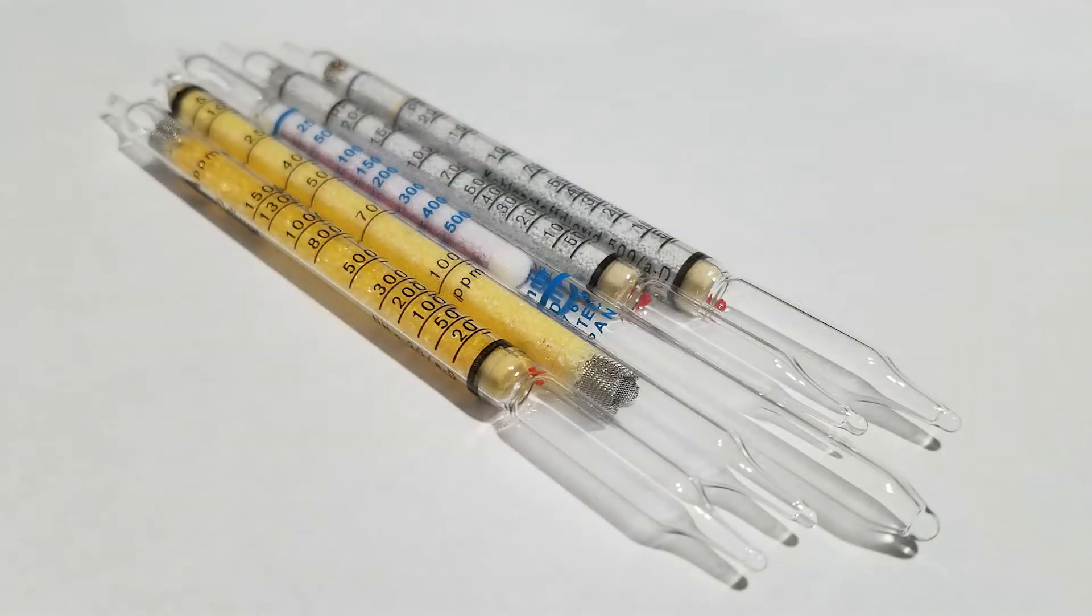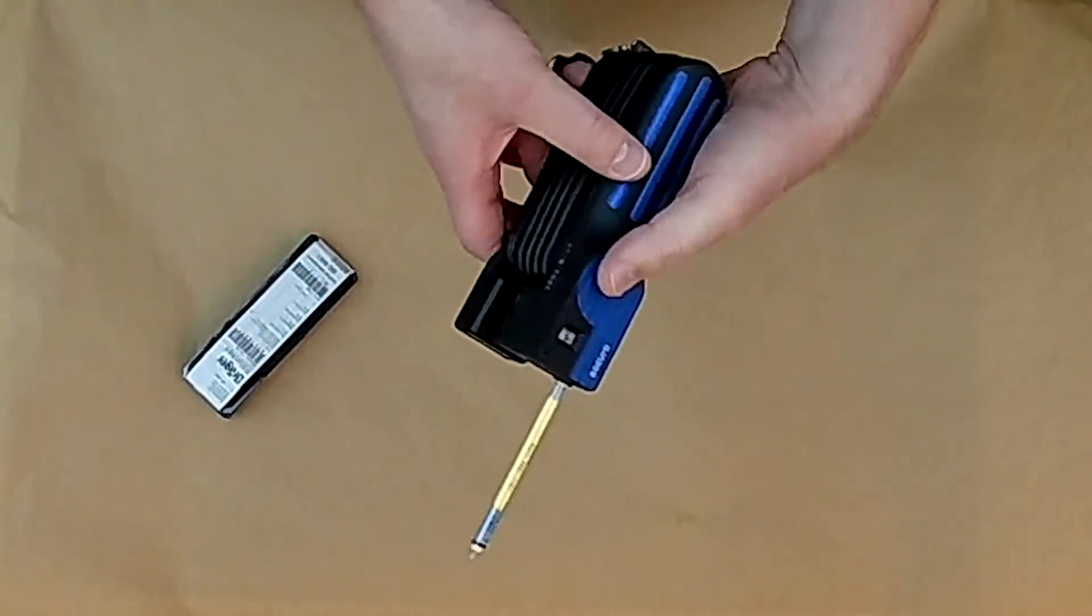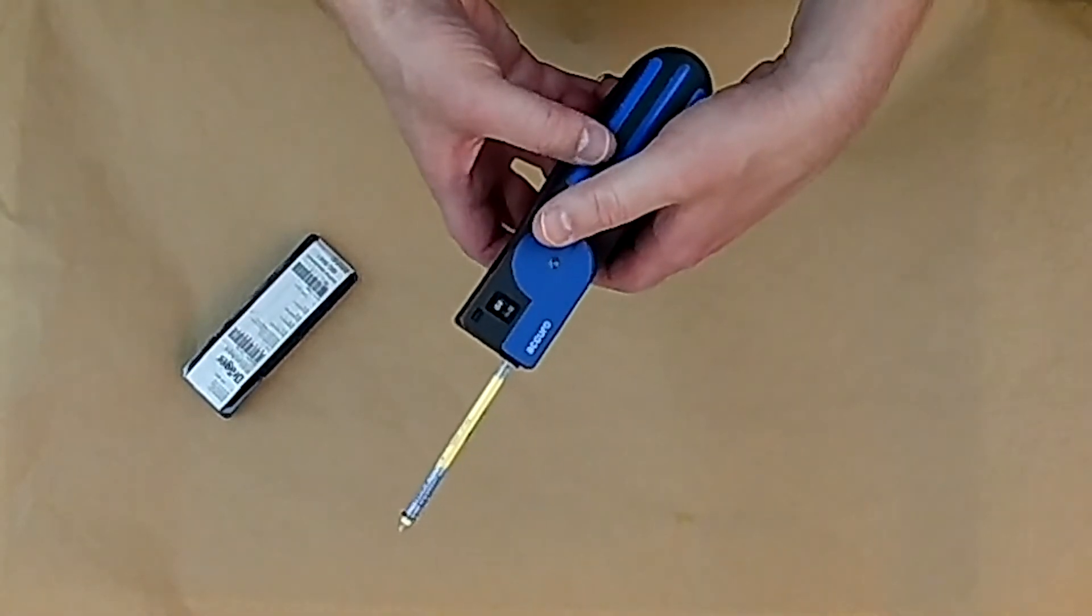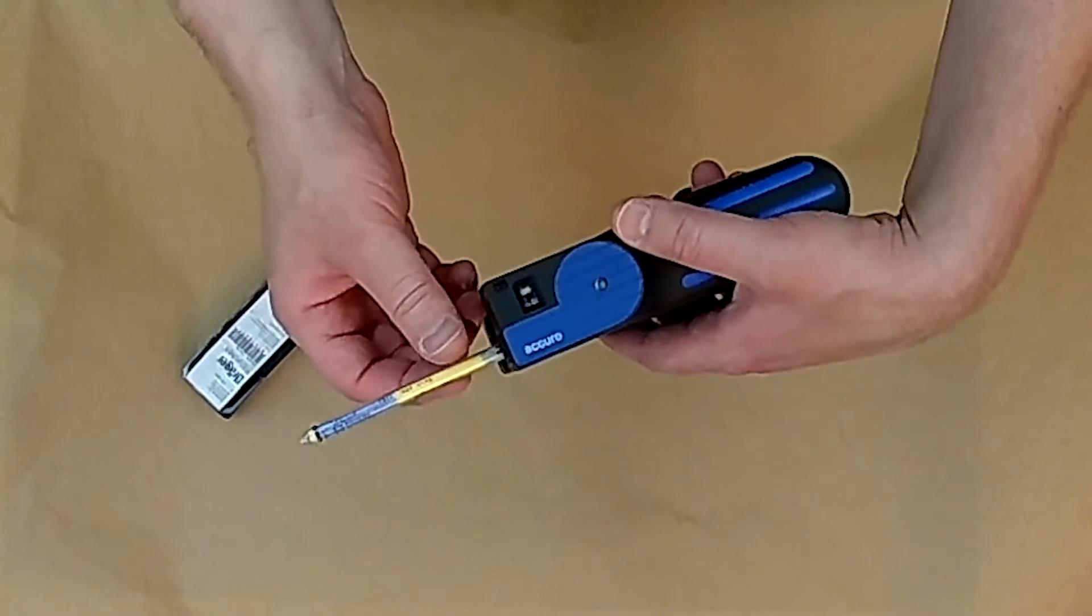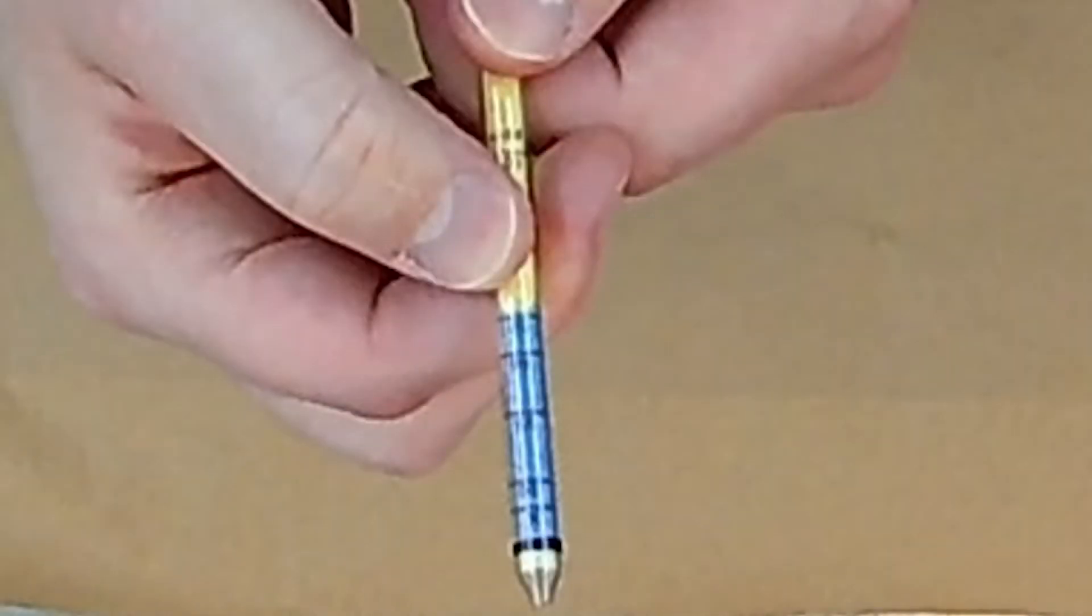These are colorimetric tubes. The pen-sized glass tubes change color along their length after exposure to ammonia as the contents of the tube react with the gas in the air. The length of the color change on the detector tube indicates the concentration of ammonia, just like a glass thermometer indicates temperature.